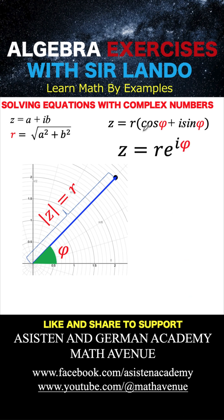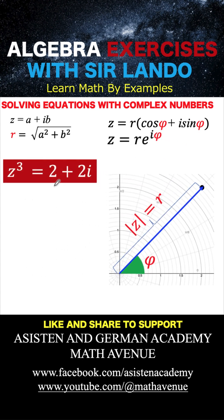Now, according to the Euler formula, this part here, the cosine of phi plus i sine of phi, that is equivalent to e raised to i phi. This is now the exponential form of the complex number z. And we are going to use this exponential form of the complex number in order to solve our problem. So again, our focus here is to find a complex number z such that when you raise it to the third power, the result is this 2 plus 2i.